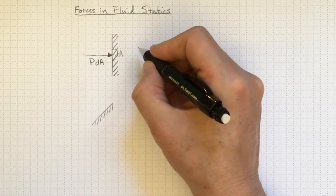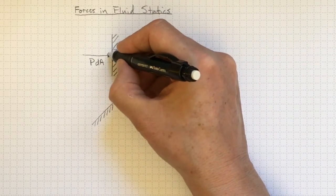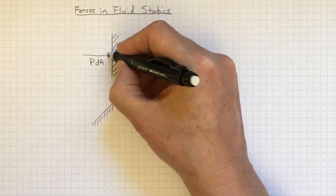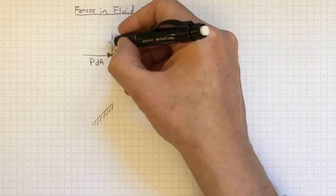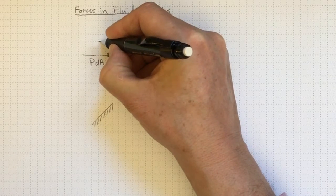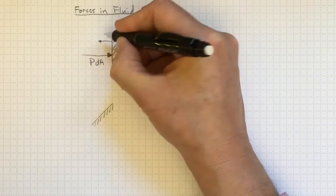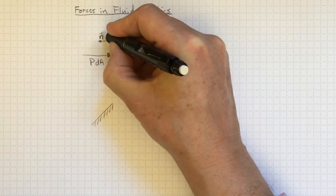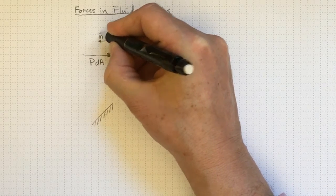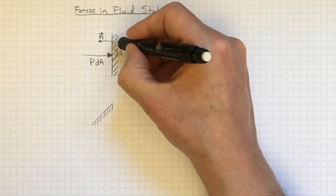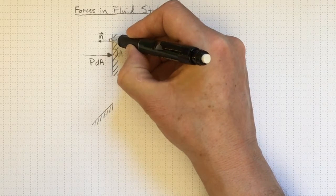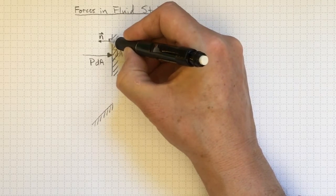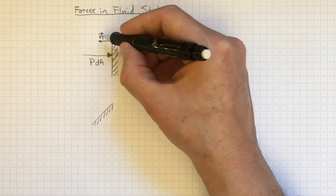And finally, if I want to get the direction correct, then I'll need a vector that accounts for the direction of the surface. And the usual way we define that with surfaces is with a unit normal vector that points outwards from the surface. So this n vector is a unit normal. That means it's one unit in magnitude, and it is at a right angle to the surface.